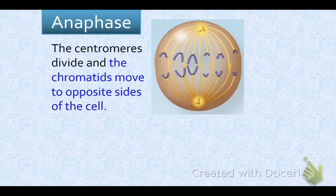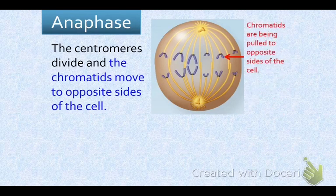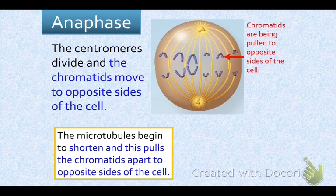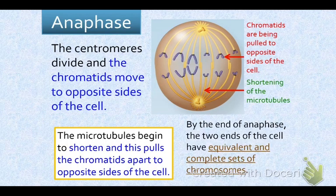In anaphase, the centromeres divide and the chromatids move to opposite sides of the cell. When you think anaphase, think separating. The microtubules are shortening and pulling them to opposites — half of the chromatids go to the south pole, half to the north pole. By the end of anaphase, the two ends of the cell have equivalent and complete sets of chromosomes.